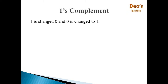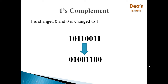Before going towards 2's complement, first we will see what is 1's complement and how to get it for a number. The 1's complement of a number is obtained by changing 1 to 0 and 0 to 1. Consider the binary number 10110011 — we get its 1's complement by changing every 1 to 0 and every 0 to 1.